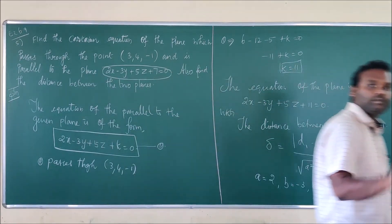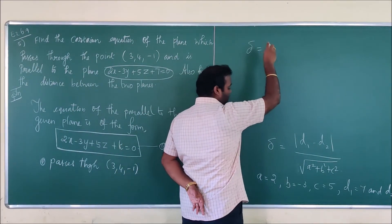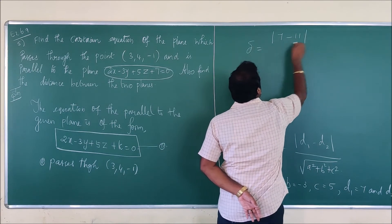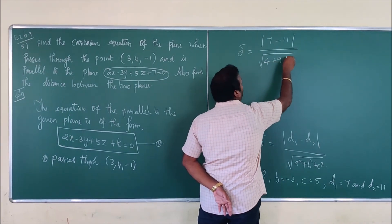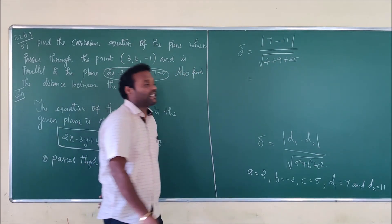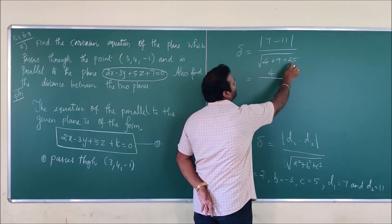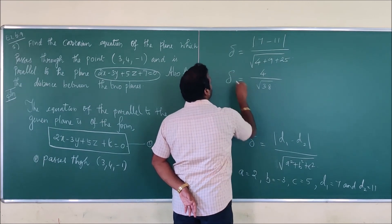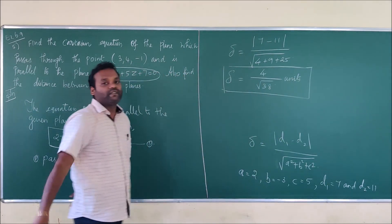Now substituting into the formula: delta equals modulus of (7 minus 11) divided by the square root of (4 plus 9 plus 25). That is modulus of -4, which becomes 4, divided by the square root of 38. So the distance between the parallel planes is delta equals 4 divided by root of 38 units.